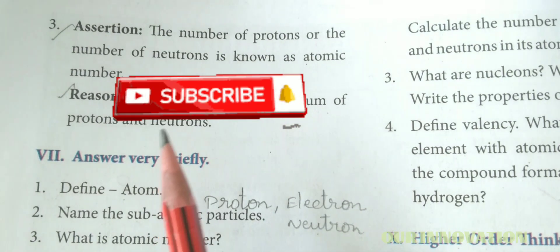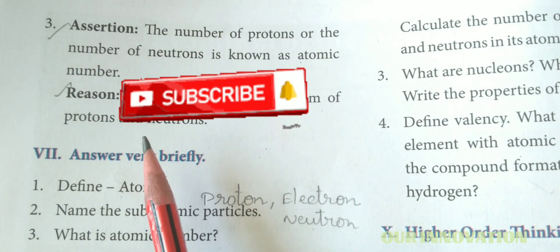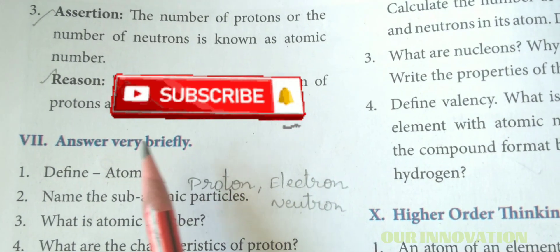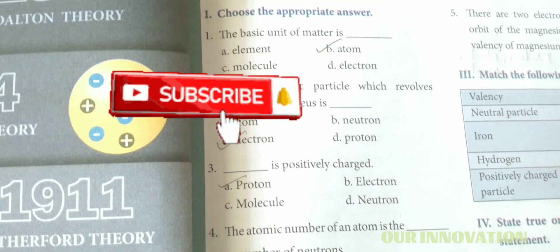Assertion: The number of protons or the number of neutrons is known as atomic number, that is true. And the reason: The mass number is the sum of protons and neutrons, so that is also true.